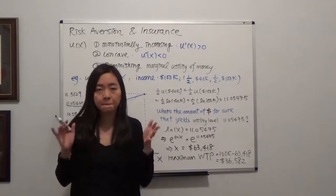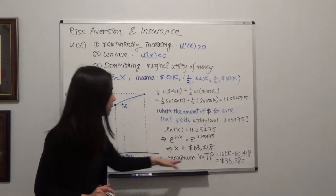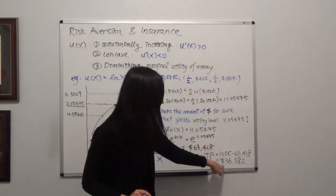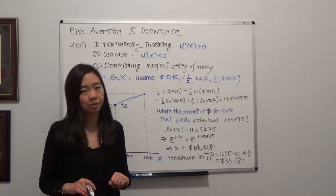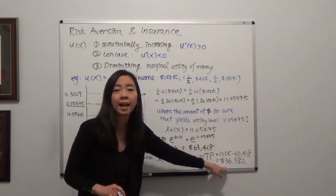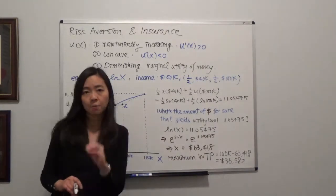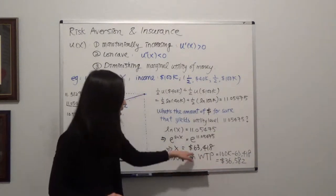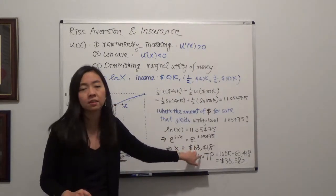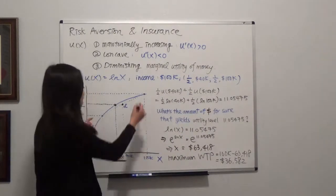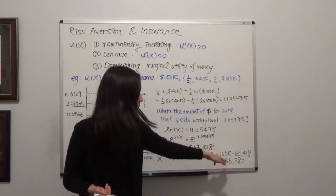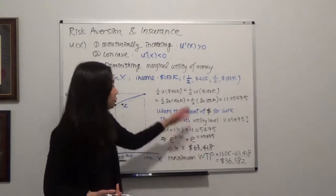So the maximum amount the insurance company can charge me will be $100,000 minus $63,418. And that's exactly $36,582. Meaning the insurance company cannot charge me more than that, because if the insurance company charges me more than this amount, that means I will be left with the amount of money that's less than $63,418. Meaning I will be worse off than playing this lottery. So if any insurance company is trying to charge me more than $36,582 to avoid this risk, I'm going to say, forget about your insurance.